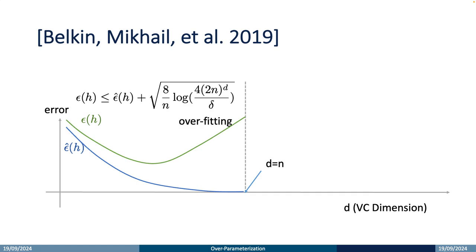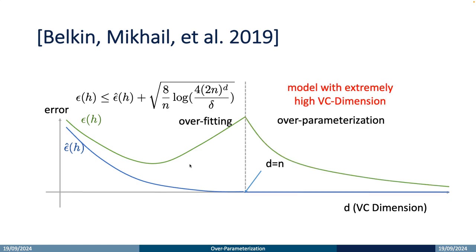To explain this phenomenon, the work of Belkin, Mikhail et al. proposed extending the error curve of traditional machine learning. In this plot, the x-axis is the VC dimension and the y-axis is the error. The blue line is the training error and the green line is the testing error. Conventionally, when the VC dimension is not too large, the testing error behaves as the VC bound predicts. However, when the VC dimension is far larger than the number of training samples, the testing error drops as the VC dimension increases. In this region, the VC bound is a very loose upper bound and cannot explain the decrease in testing error. This error curve is called the double descent curve, and this phenomenon is called overparameterization.